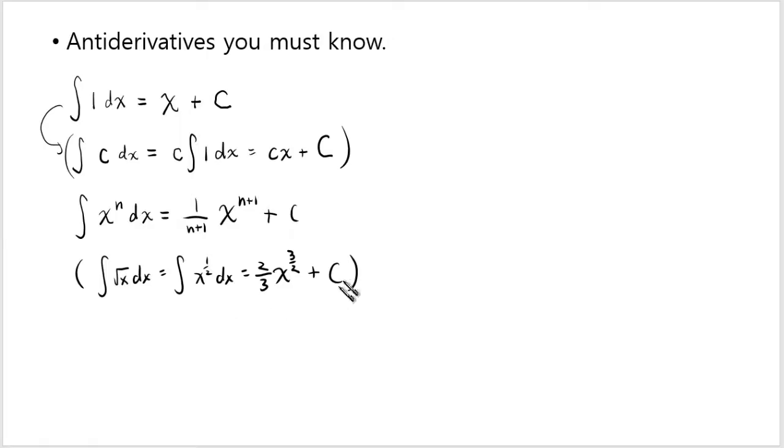Now, these are the simplest ones. And in addition to this, you should know the integral of e to the x. Well, the antiderivative of e to the x would be e to the x because the derivative of e to the x is e to the x.